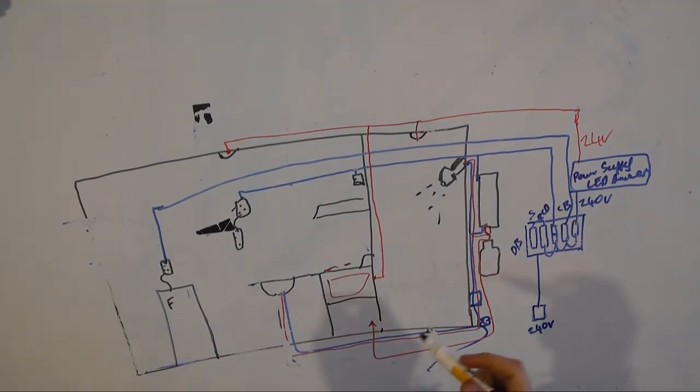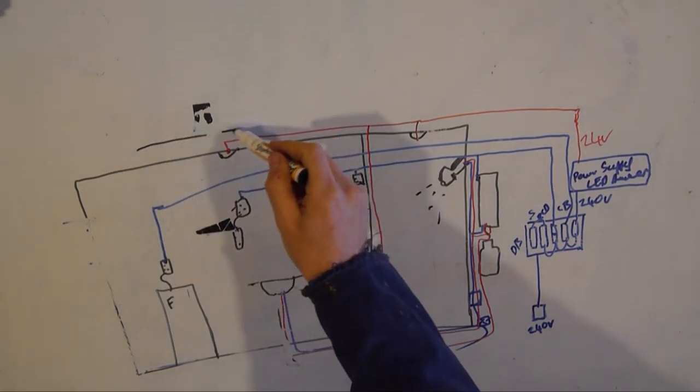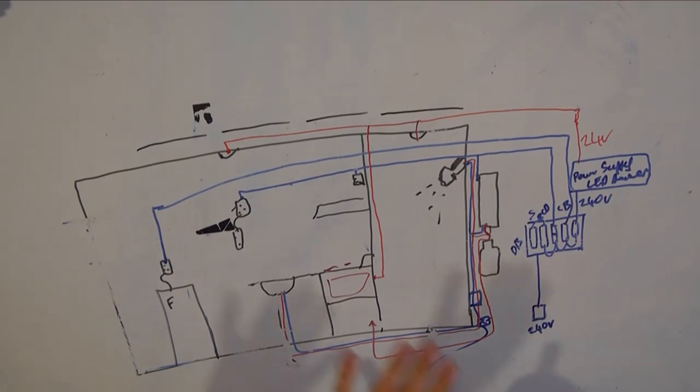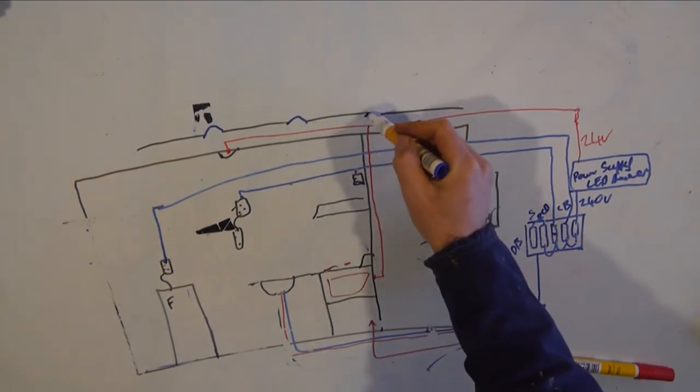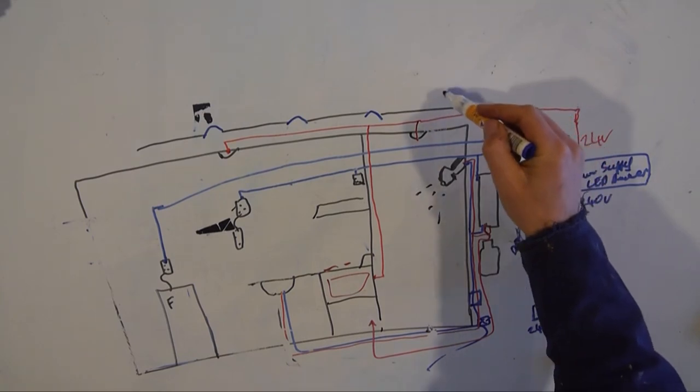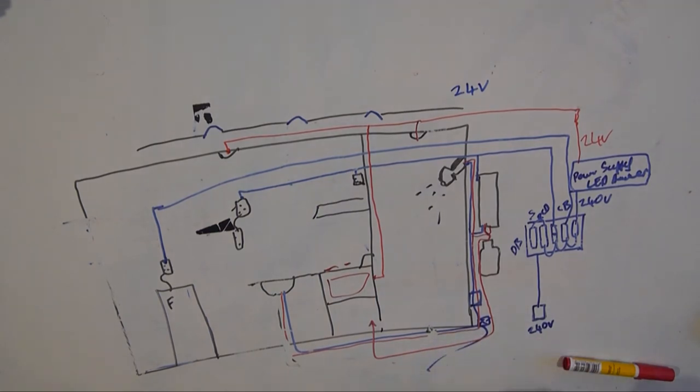So now we go on to solar. So we're going to run, I don't know, I think we're going to run four panels. Again, that's a whole topic in itself, how many panels you need. So basically what you've got with solar is these panels are all linked together and these are like we'll say 24 volts, they could be 12 volts but we'll just say 24.